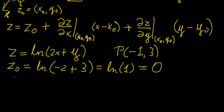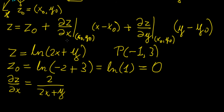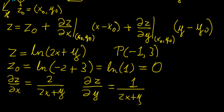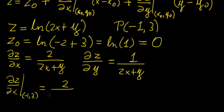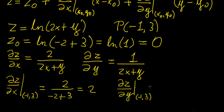Now the next thing is to find the partial derivatives. The partial of z with respect to x is 2 over (2x plus y), using the rule of differentiation for logarithmic functions. And with respect to y, that's going to be 1 over (2x plus y). Now we evaluate those derivatives at the point (-1, 3). The partial with respect to x at (-1, 3) is 2 over (-2 + 3), which is just 2. And the partial with respect to y at (-1, 3) is 1 over (-2 + 3), which is 1.